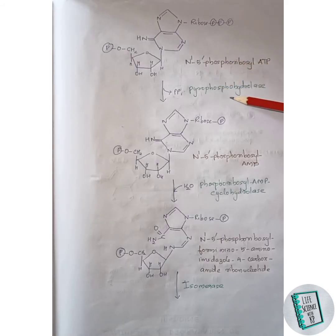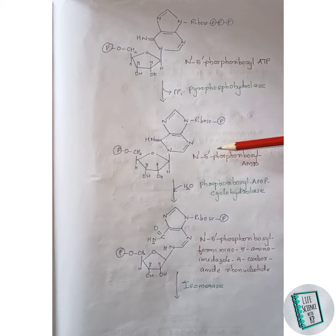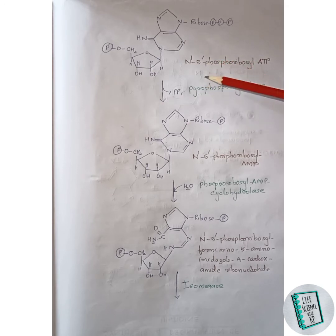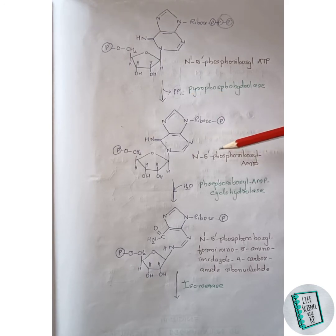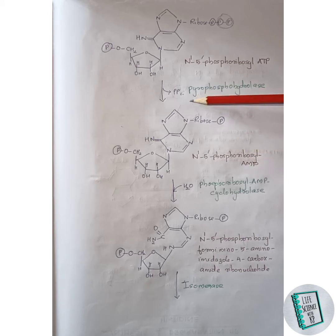Then in the presence of pyrophosphohydrolase, N1-5'-phosphoribosyl ATP is converted to N1-5'-phosphoribosyl AMP. What happens here is that the pyrophosphate group is removed, and only removal of pyrophosphate occurs to give this product.